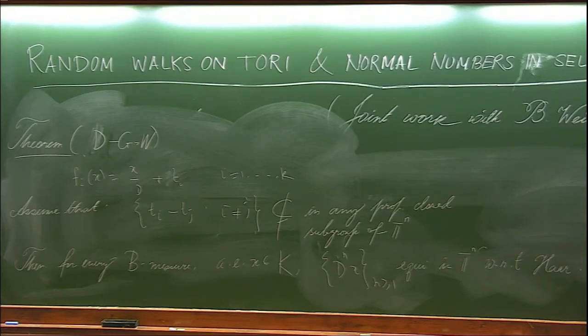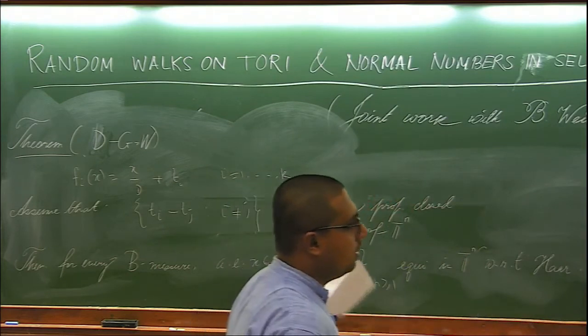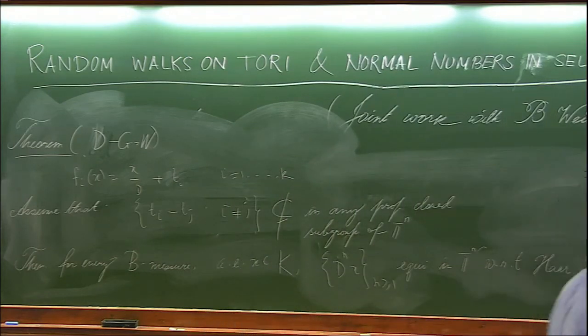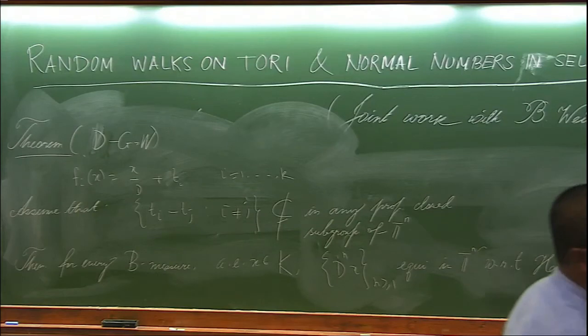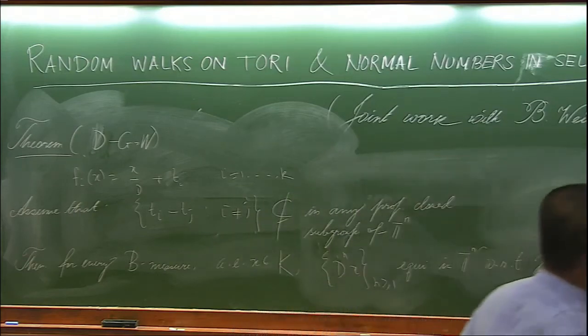Coupling that with the earlier results of Hochman and Shmerkin, what we get is with respect to any base. Because Hochman and Shmerkin talks when the base is not the rational power of the contraction ratios and our result basically complements their result. So coupling these two, we get that with respect to any base, almost every point equidistributes in the torus with respect to Haar measure.